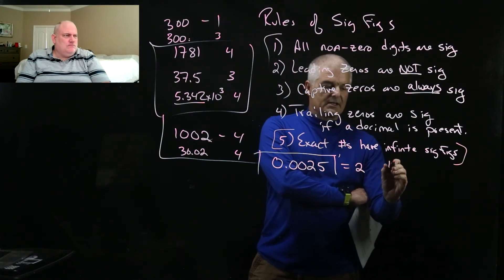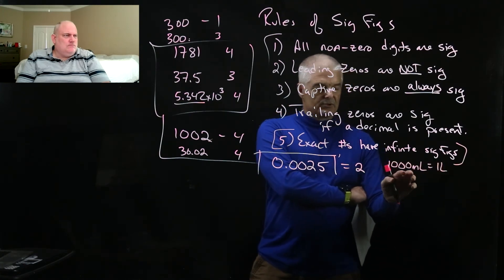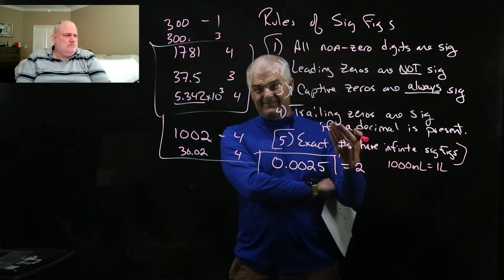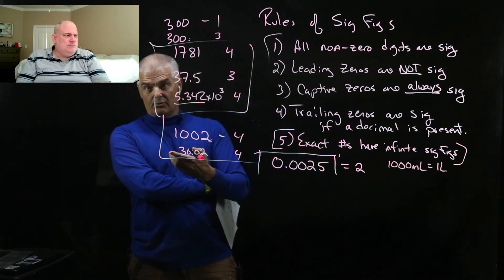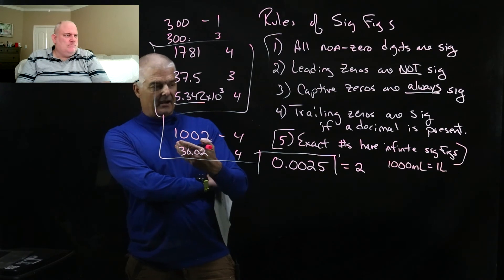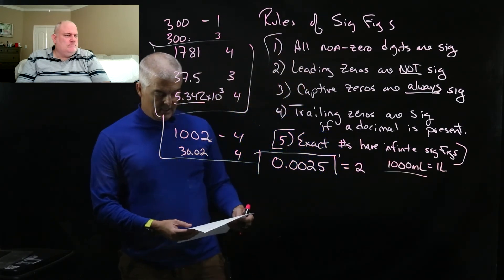By the way, rule number five has to do with when we do things like conversions. We say that, for example, there's a thousand milliliters in one liter. A lot of people will say, wait a second, there's only one significant digit. But this is like the definition of a liter or of a milliliter. So it's like a thousand point zero zero zero zero. It's an exact number because it's an exact conversion. So this is an exact number and this would have an infinite number of significant digits.